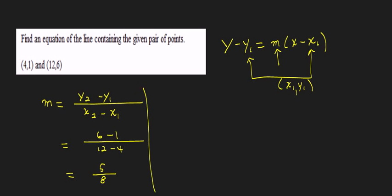And it's worth mentioning again that we could have subtracted in the other direction. We could have said 1 minus 6 and then 4 minus 12, which would have given us a negative 5 over a negative 8, which is the same as 5 eighths. So don't worry about trying to figure out which direction you have to subtract.